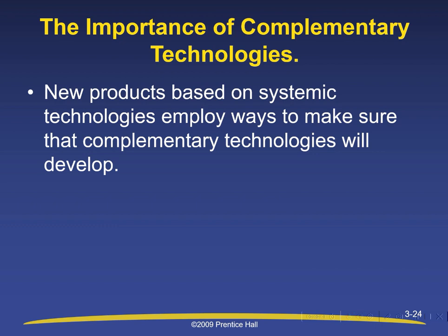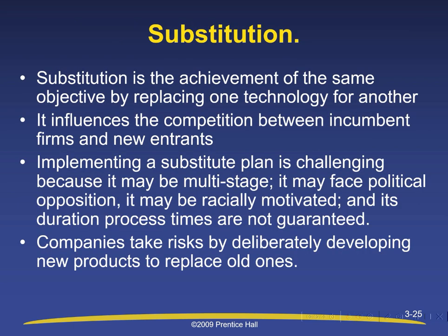The importance of complementary technologies: new products based on systemic technologies employ ways to ensure that complementary technologies will develop. Substitution is the achievement of the same objective by replacing one technology with another. It influences competition between incumbent firms and new entrants. Implementing a substitution plan is challenging because it may be multi-stage, may face political opposition, and its duration and process times are not guaranteed. Companies take risks by deliberately developing new products to replace old ones.